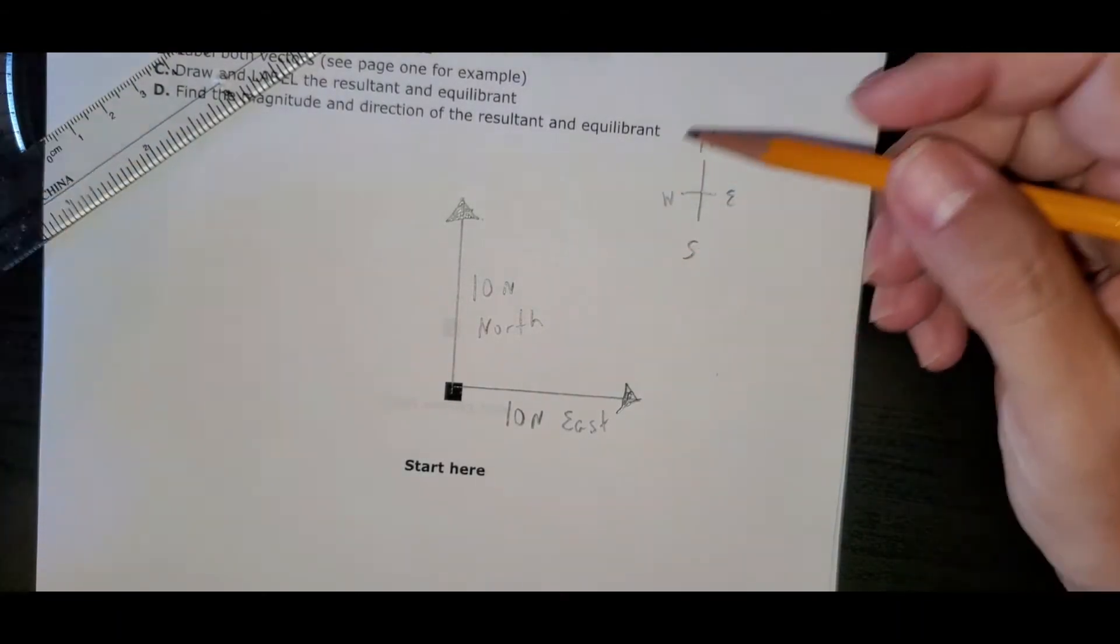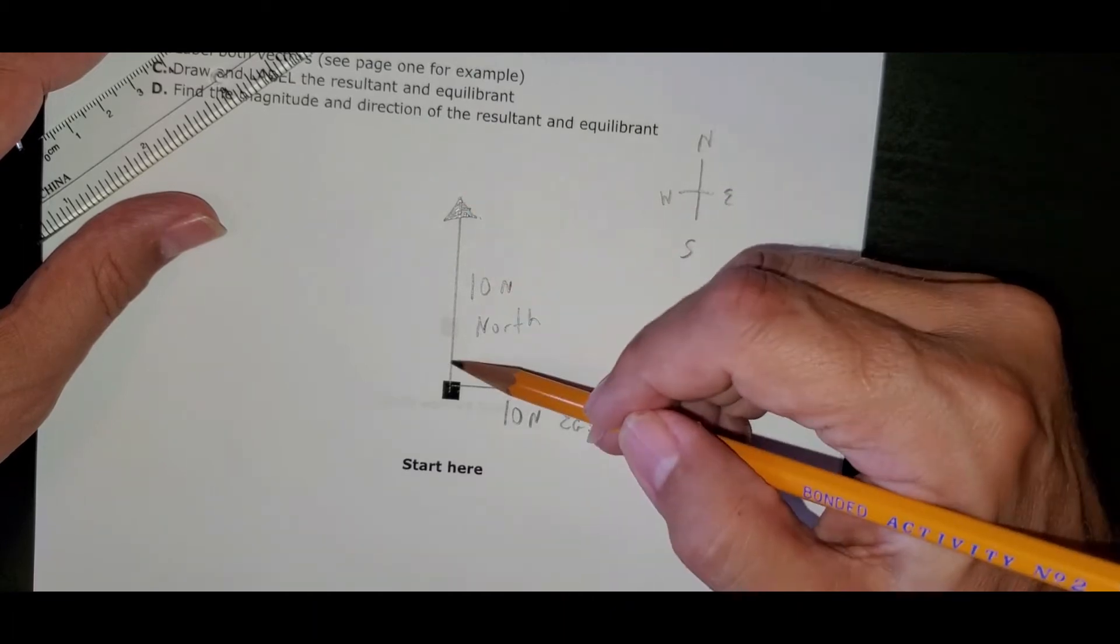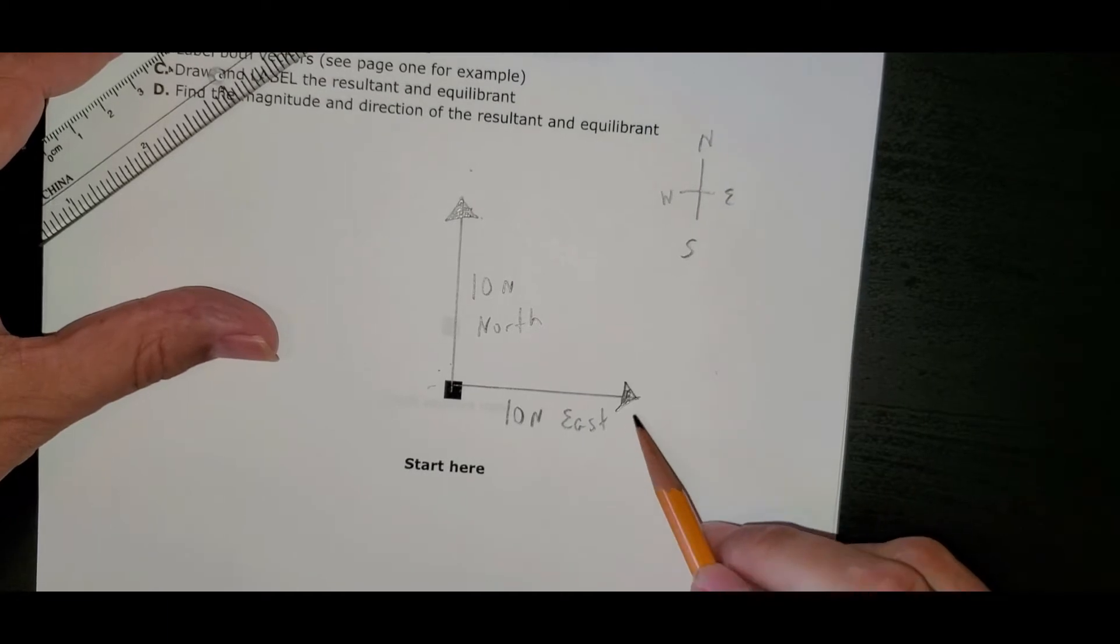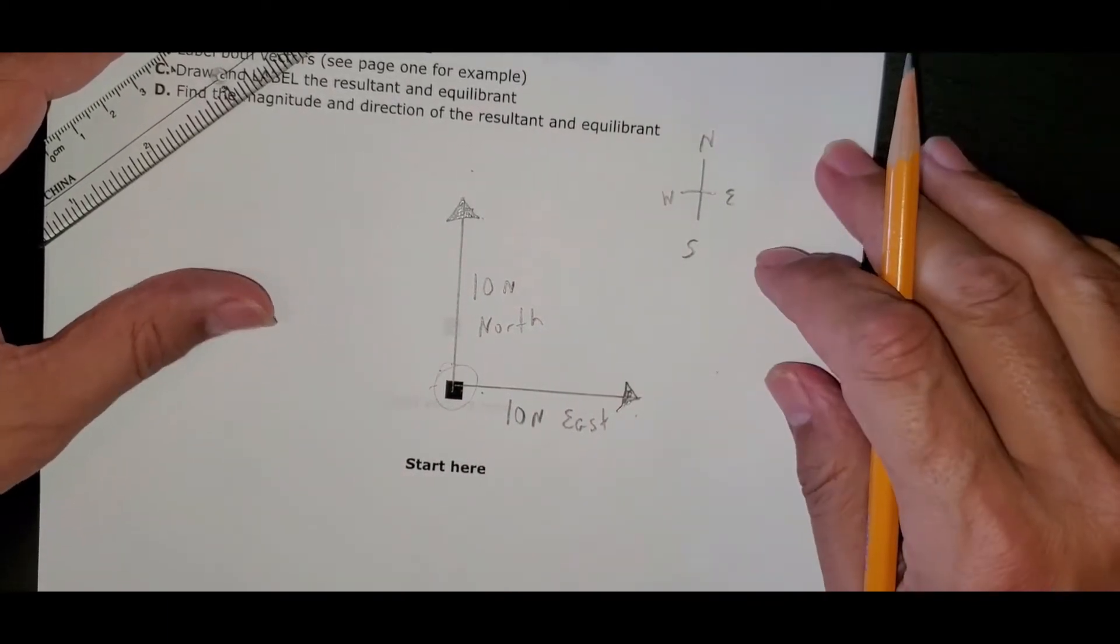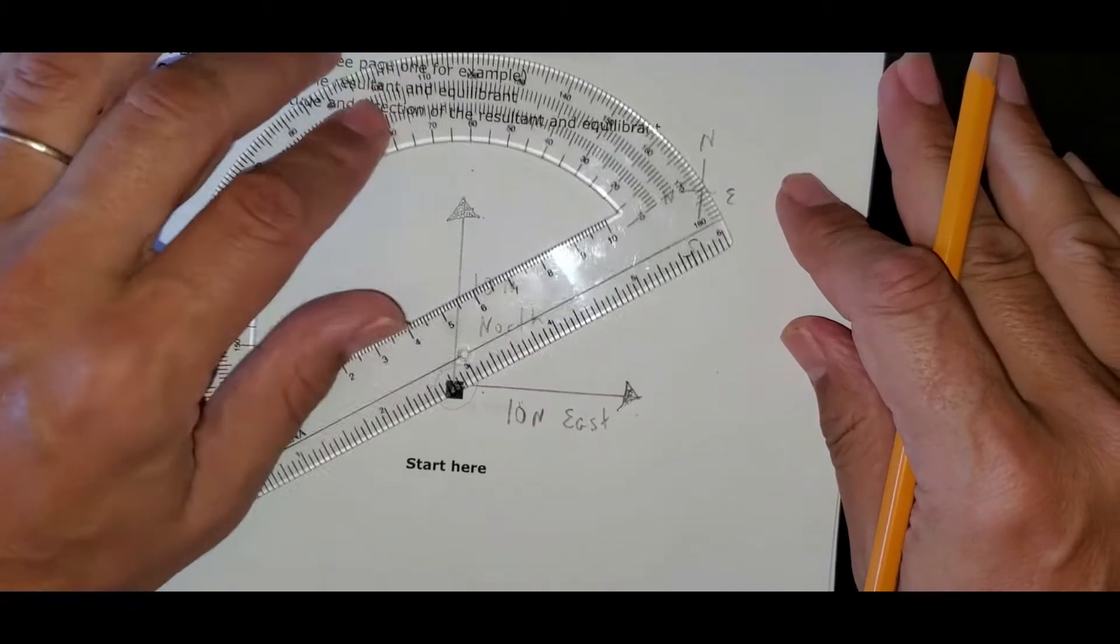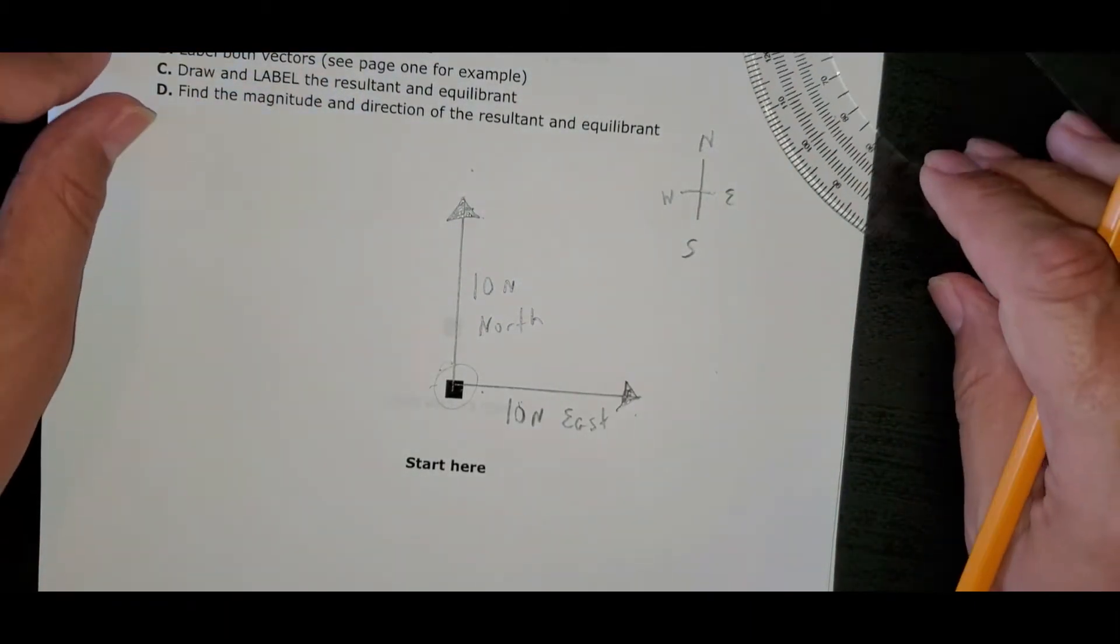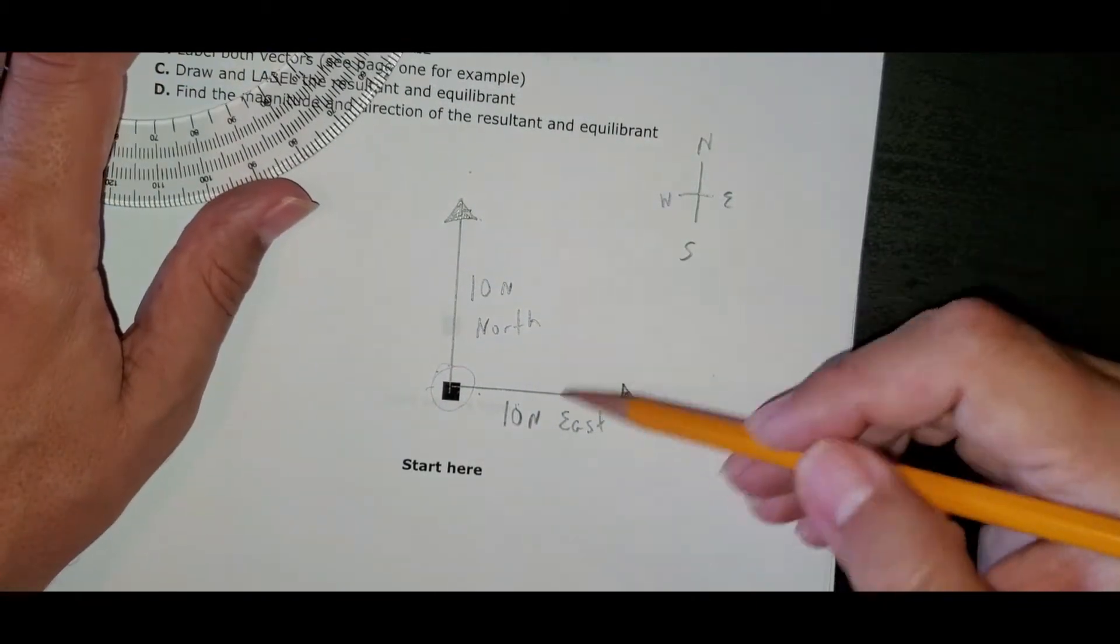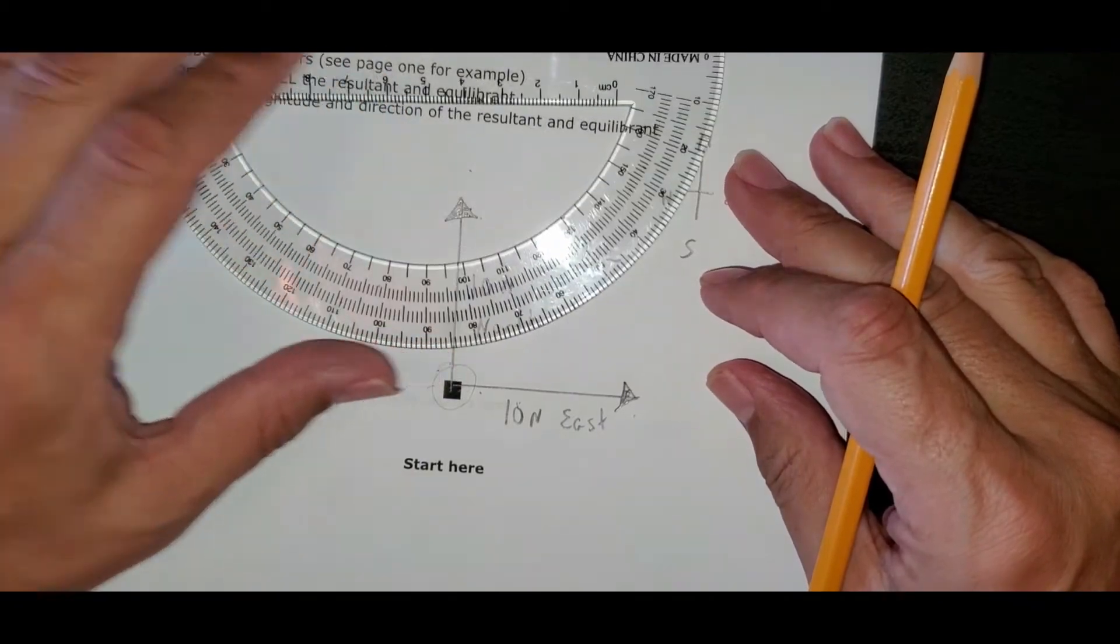So we want to find the resultant. The way that you do that is you turn your picture of your two vectors that are tail to tail into a parallelogram. This is the arrowhead, this is the tail. This is a tail to tail connection. The method I'm showing you only works when vectors are tail to tail. This is the parallelogram method for finding the resultant. We're going to turn this into a parallelogram with some dotted lines.